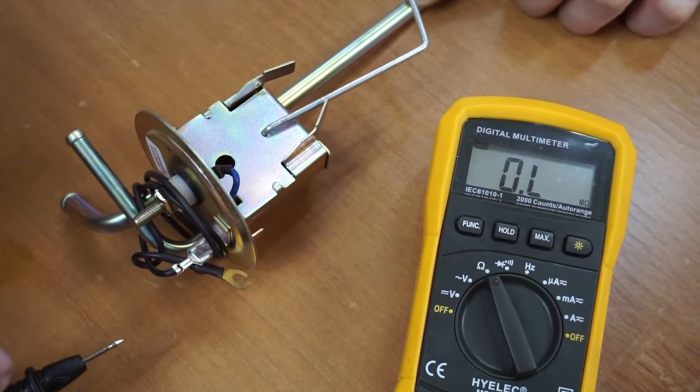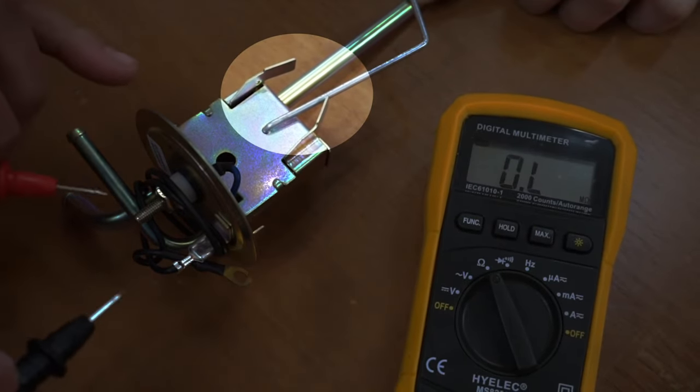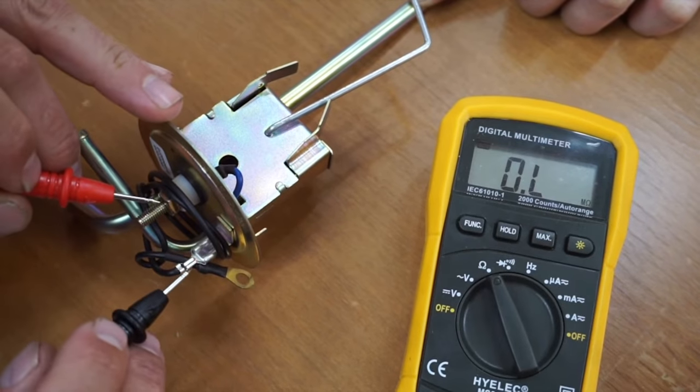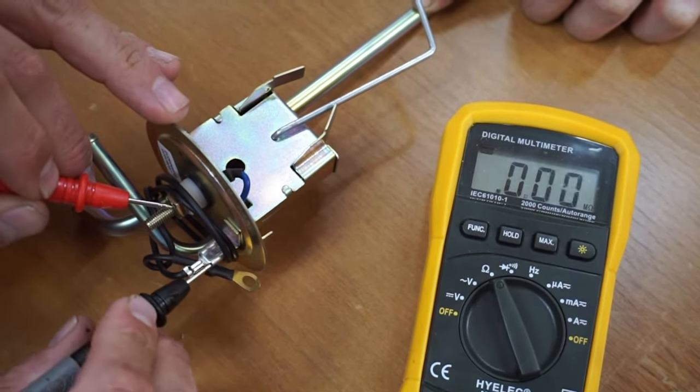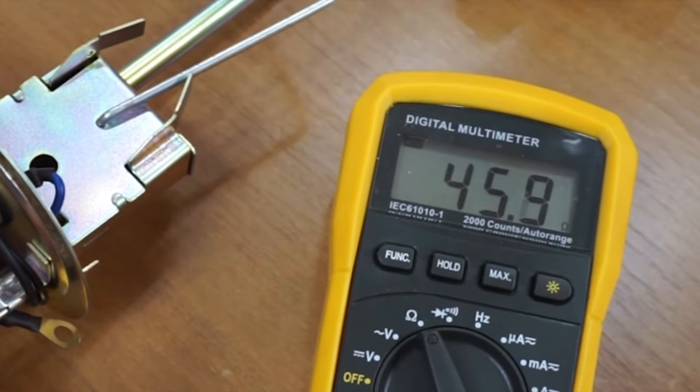To simulate how to adjust this, we went ahead and bent our tabs in so we can show you what it would look like in the instance that it is way out of adjustment. You can see here where it's empty, which is 45 ohms.